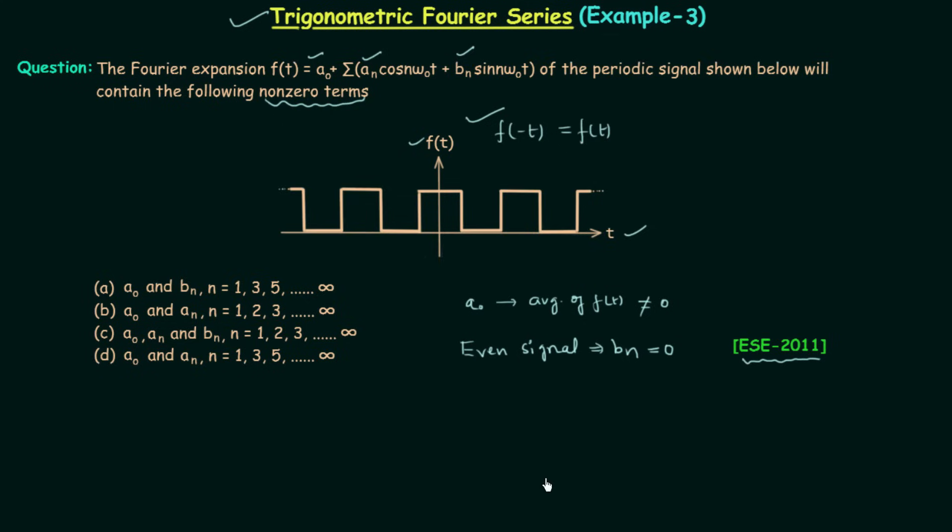Because there will be no sine terms and therefore bn is equal to 0. As you can see in option a, there is bn and question is asking about nonzero terms but bn is equal to 0 therefore option a is not the correct option and if you see option c, here also bn is there so option c is also not the correct option.